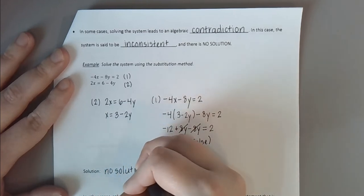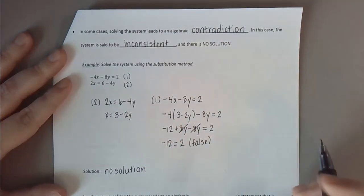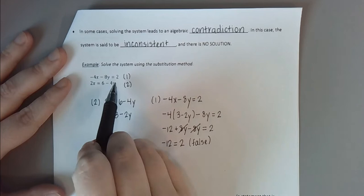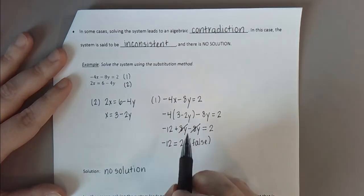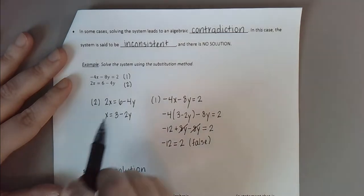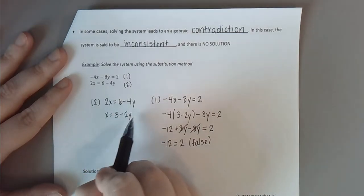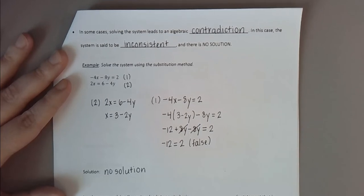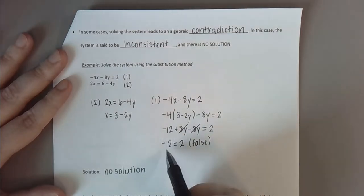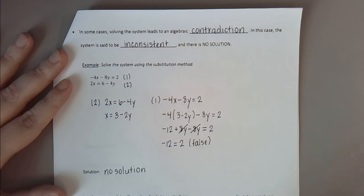You might wonder whether this happened because of how we chose to solve. If we had isolated y instead and substituted, would the same thing happen? Yes — you may not get the same contradiction, but you would still reach a contradiction and the same conclusion: no solution, the system is inconsistent. The conclusion we reach is independent of the technique we use to solve. Whenever we get a contradiction and variables are eliminated, that is our indication that there is no solution.